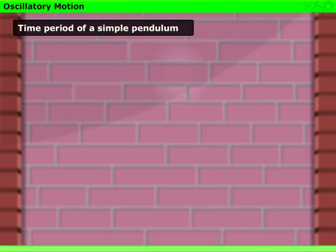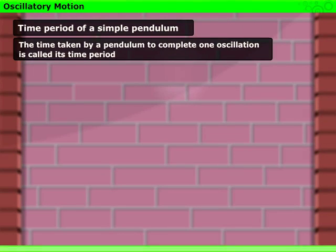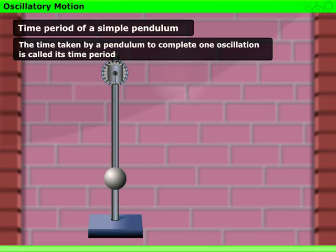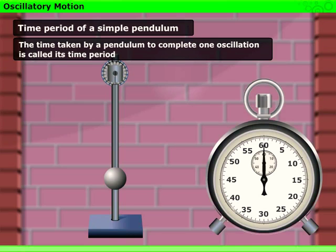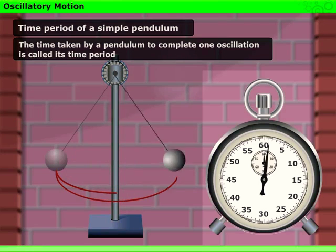Time period of a simple pendulum. The time taken by a pendulum to complete one oscillation is called its time period. For example, if a pendulum takes two seconds to complete one oscillation, then its time period is also two seconds.